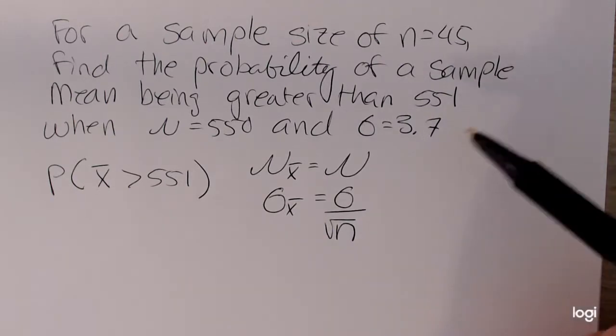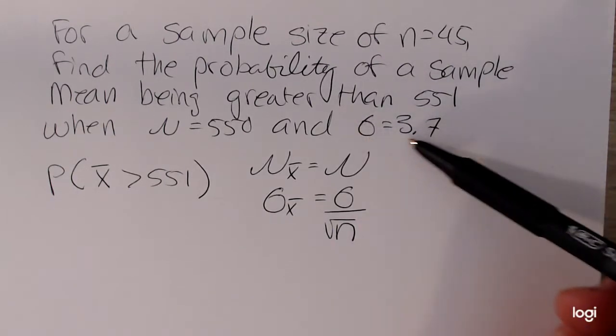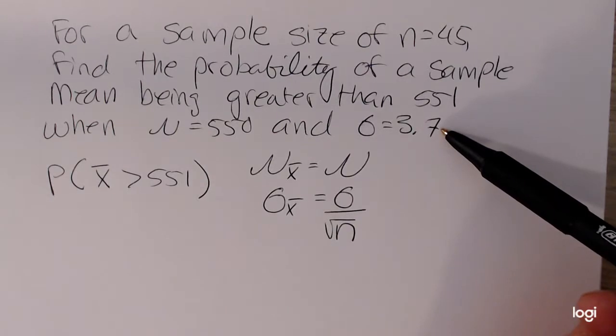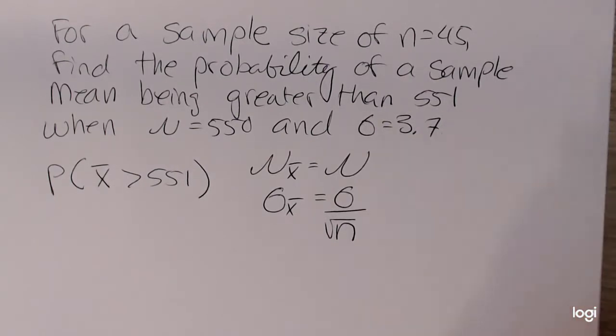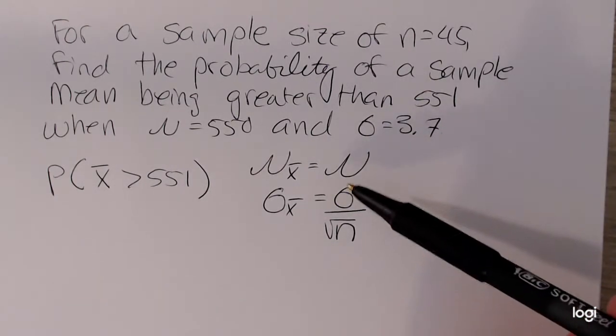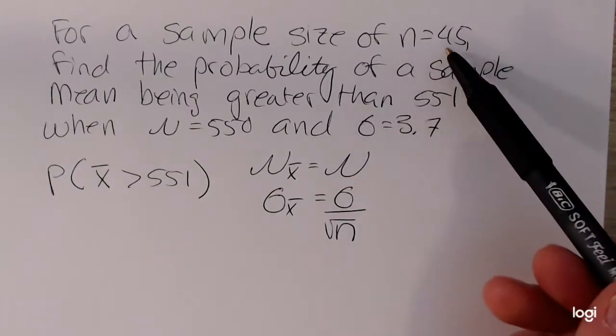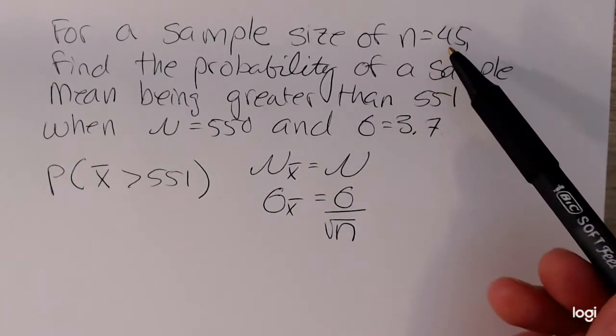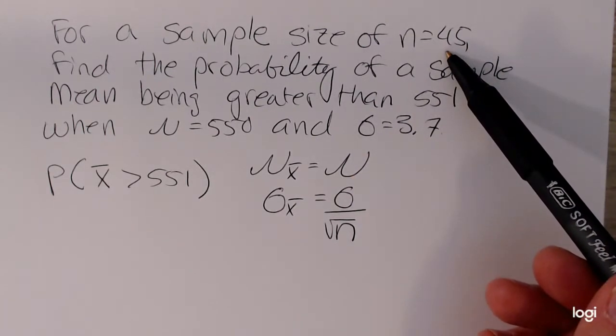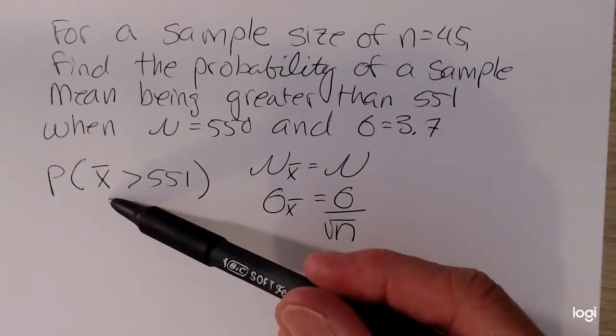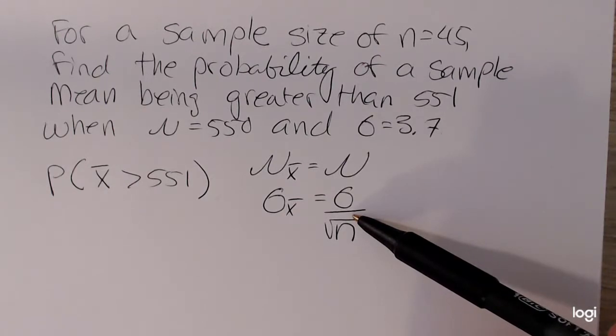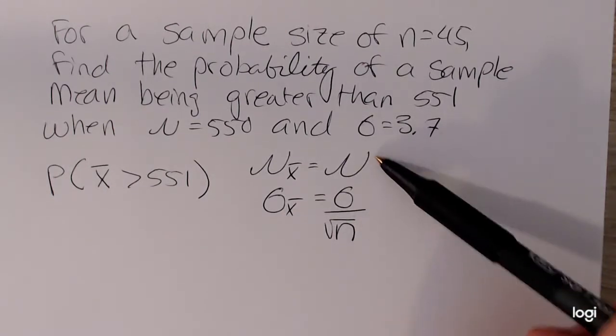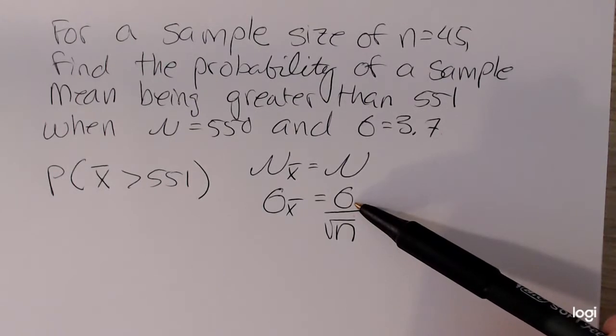Sometimes you'll run across a problem that will give the original population variance. Make sure you take the square root of that to get it in terms of the standard deviation. Now, the central limit theorem says for sufficient sample sizes, sample sizes of at least 30, x bar will be normally distributed with this mean and this standard deviation. And unless this is 0 and this is 1, it's not going to be standard normal.